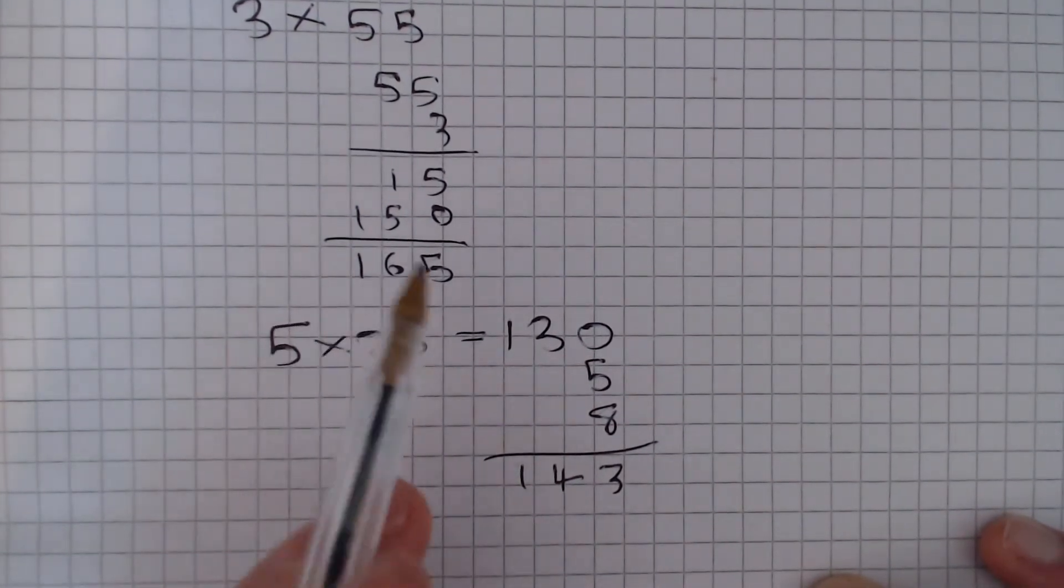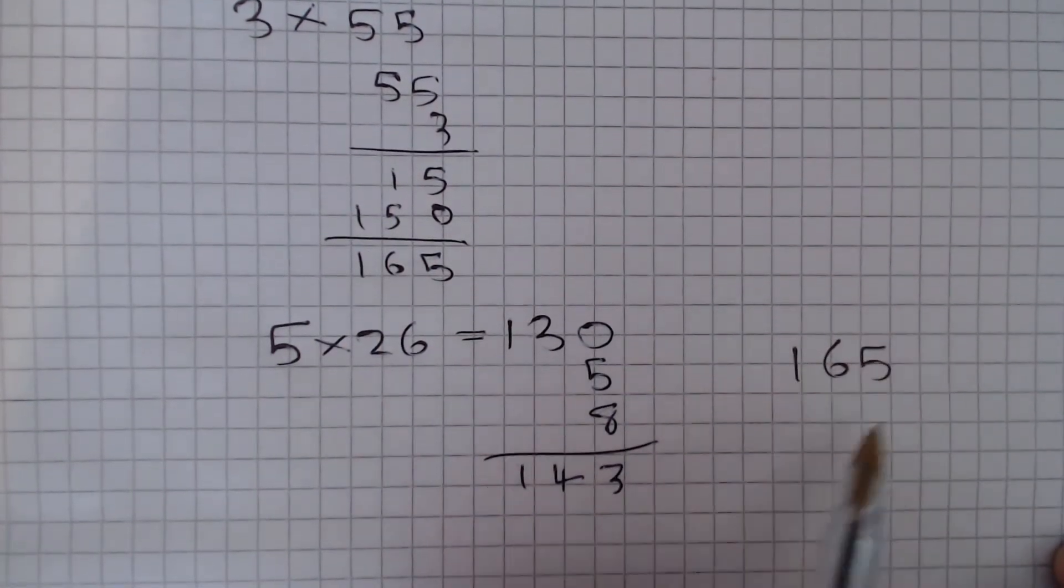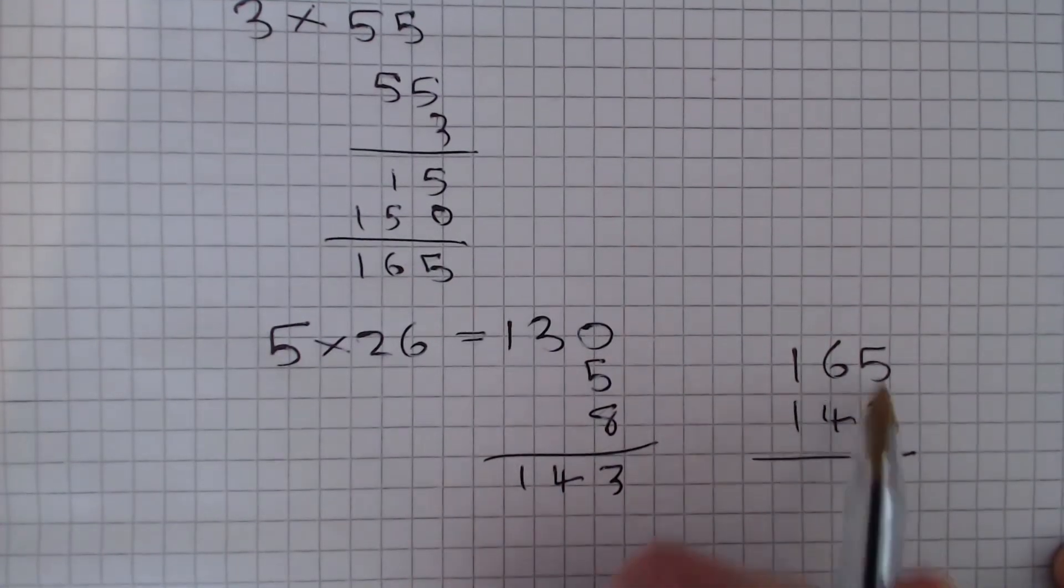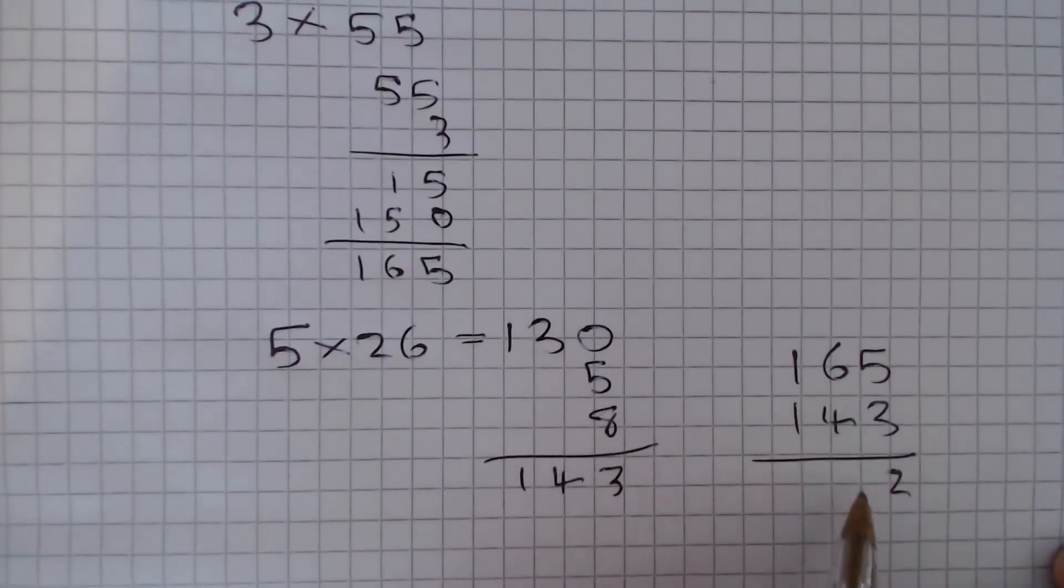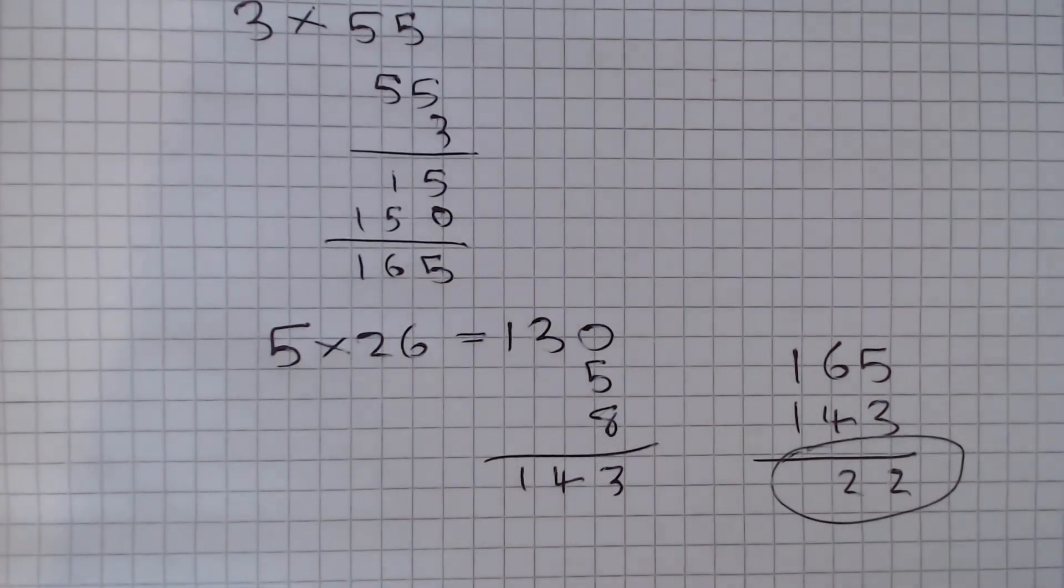So we have 165 spaces, but only 143 are occupied, so we are just going to take these away from each other. 5 minus 3 is 2, 6 minus 4 is 2, and 1 minus 1 is 0, so the answer is 22 spaces.